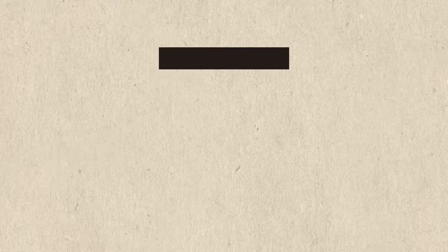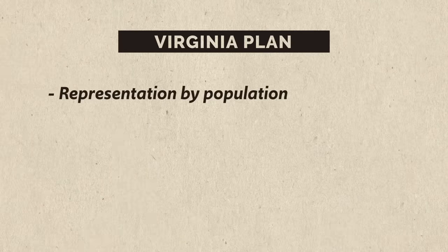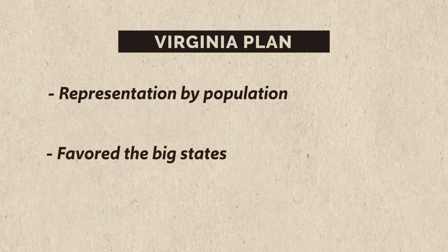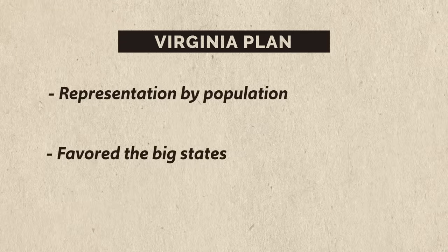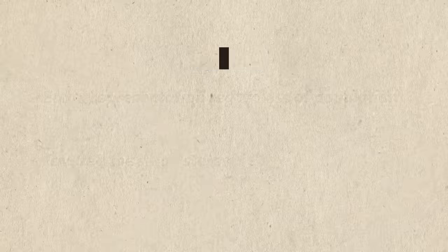Of the many debates, maybe the most heated was over how people would be represented in the new government. One idea was the Virginia Plan, which argued for representation by population — not surprisingly, since Virginia was one of the most populous states, this benefited big states. The small states heard this and proposed the New Jersey Plan, which argued that states should be represented equally — which would benefit small states. The big states were like, 'y'all so crazy.'